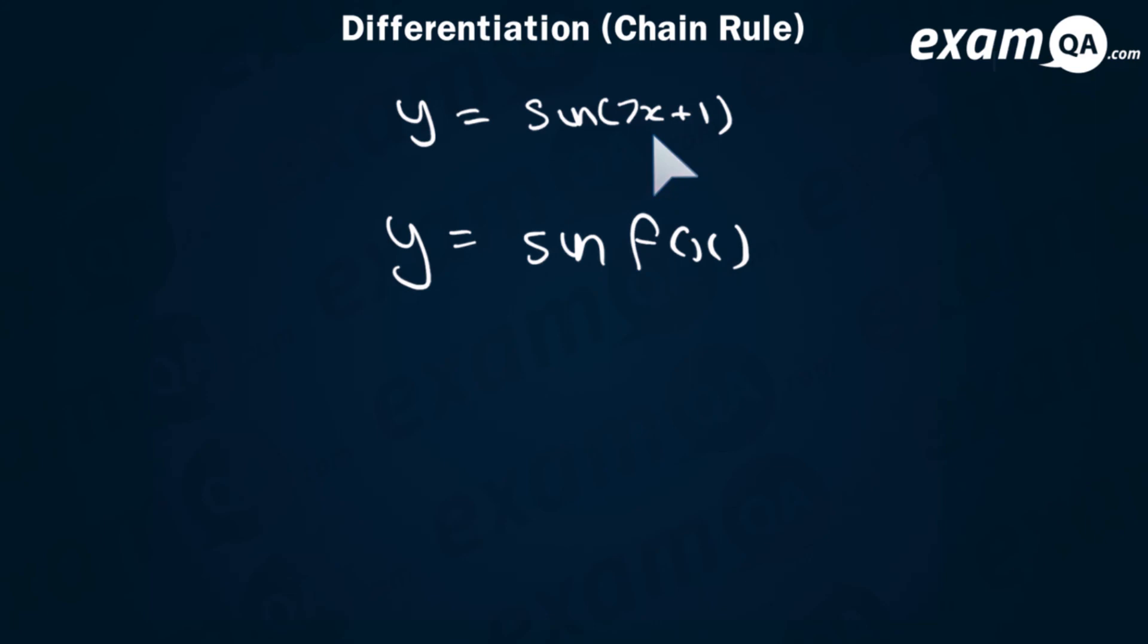So here we've got y equals sine 7x plus 1. We can just look at this as y equals sine f(x). So f(x) is that function we've got 7x plus 1. And generally, this differentiates to cos f(x). However, if you've been practicing your chain rule a lot, you also know f'(x) also comes to the front. So the differentiation of something general in the form sine f(x) goes to cos f(x), but it also gets multiplied by f'(x).